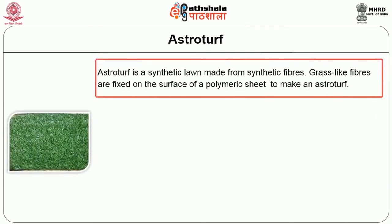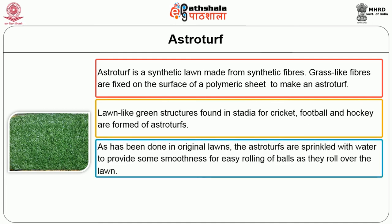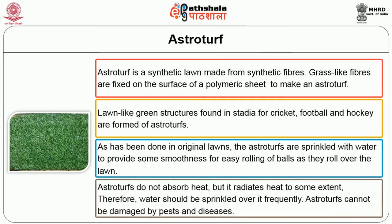Astroturf is a synthetic lawn made from synthetic fibers. Grass-like fibers are fixed on the surface of a polymeric sheet to make an astroturf. Lawn-like green structures found in stadia for cricket, football and hockey are formed as astroturfs. As done in original lawns, astroturfs are sprinkled with water to provide smoothness for easy rolling of balls over the lawn. Astroturfs do not absorb heat but radiate heat to some extent. Therefore, water should be sprinkled over it frequently. Astroturfs cannot be damaged by pests and diseases.